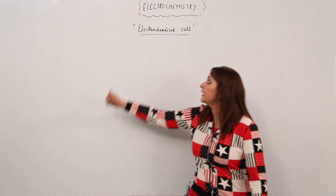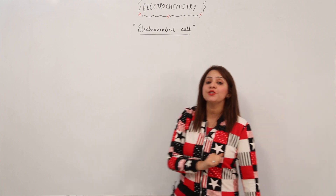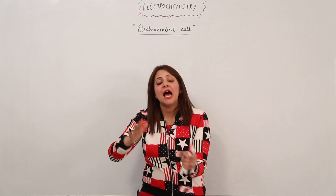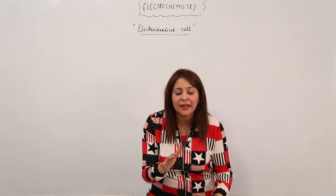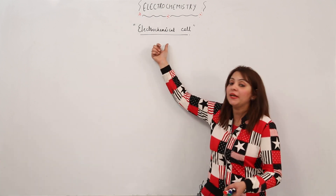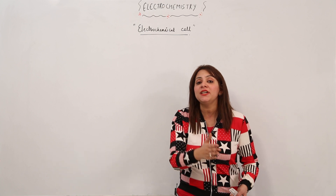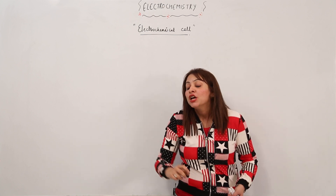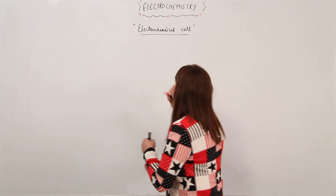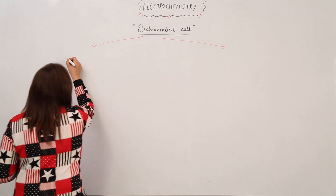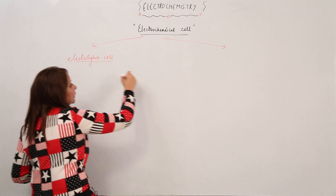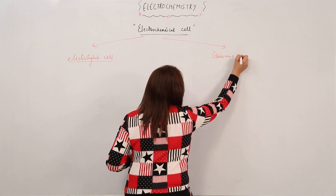We are going to take up the topic of the electrochemical cell. Electrochemistry is a branch which deals with the conversion of electric energy into chemical energy, and simultaneously we can have chemical energy converted into electric energy. We need a device in which this kind of electrochemical change can be carried out — that is the electrochemical cell. Electrochemical cells are basically of two types: one is the electrolytic cell and the other is the galvanic cell.